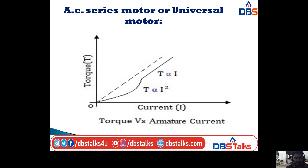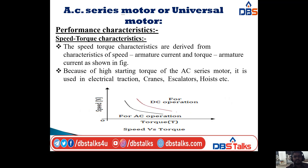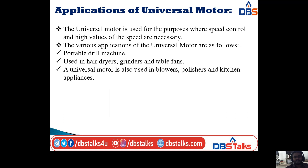The speed-torque characteristics are derived from the speed-armature current and torque-armature current characteristics. Because of the high starting torque, the AC series motor is used in electrical traction, cranes, escalators, and hoists. The universal motor is used where speed control and high values of speed are necessary, such as portable drill machines, hair dryers, grinders, table fans, blowers, polishers, and kitchen appliances.